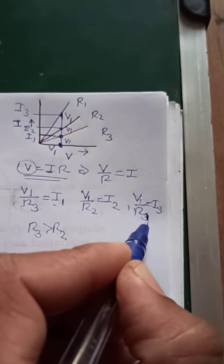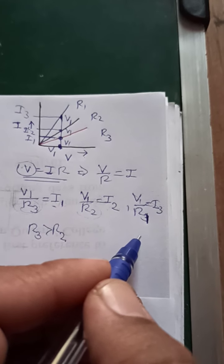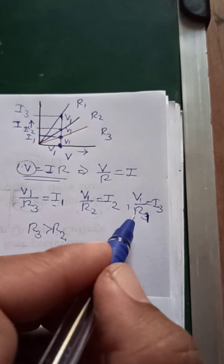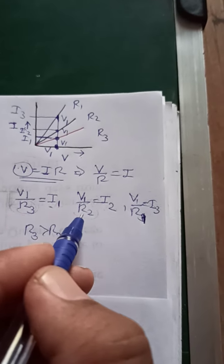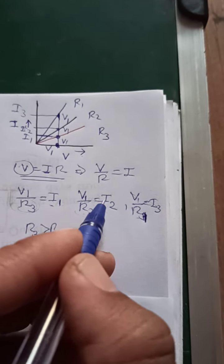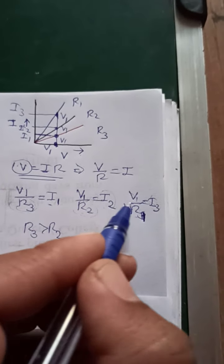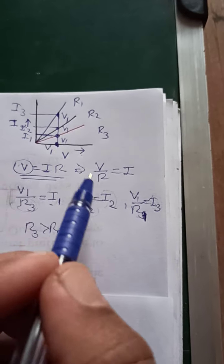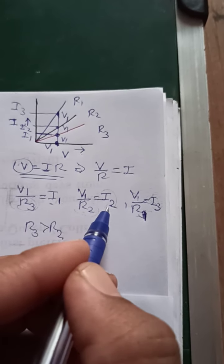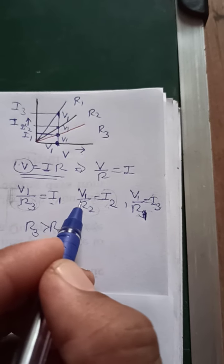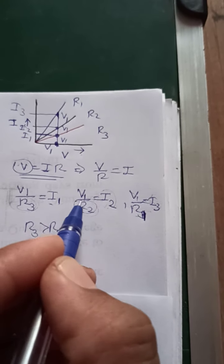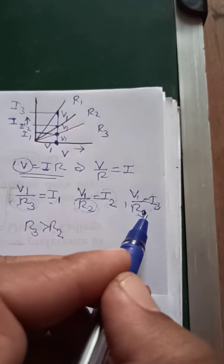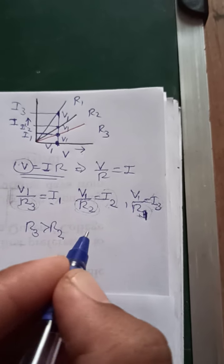Now when we compare R2 to R1, you will see that I3 is greater than I2, so R2 is greater than R1.